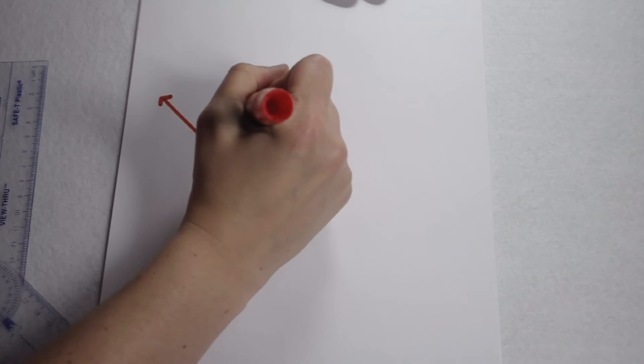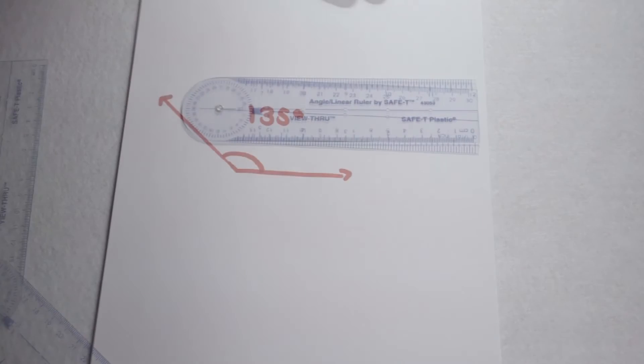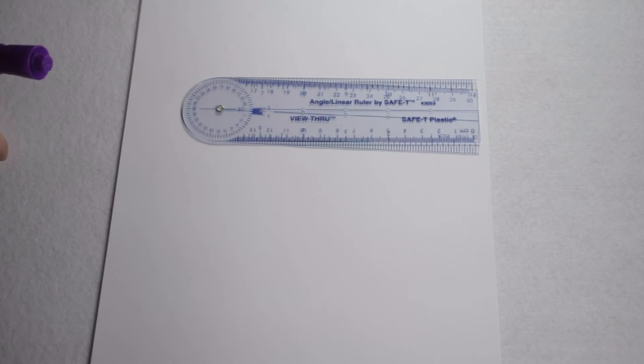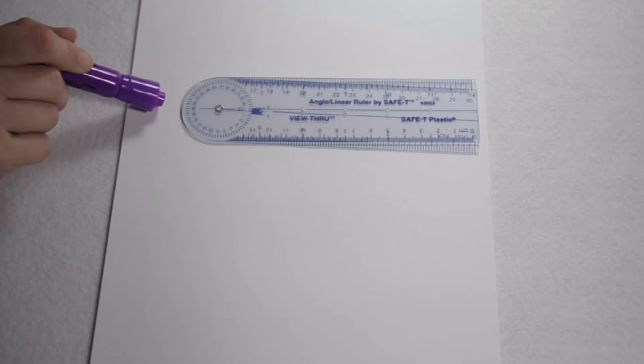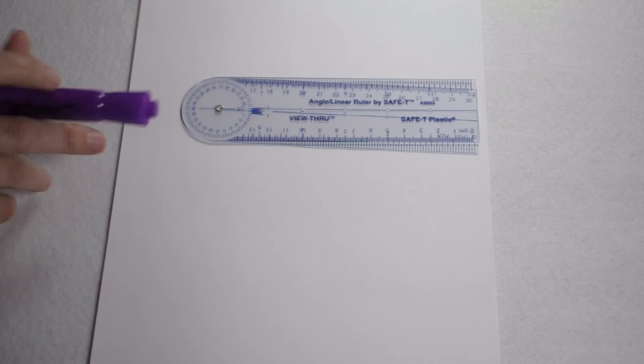We need to draw a 250 degree reflex angle. An advantage of an angle ruler is that it measures all the way up to 360 degrees. So we can simply keep turning until we hit that 250 degrees.